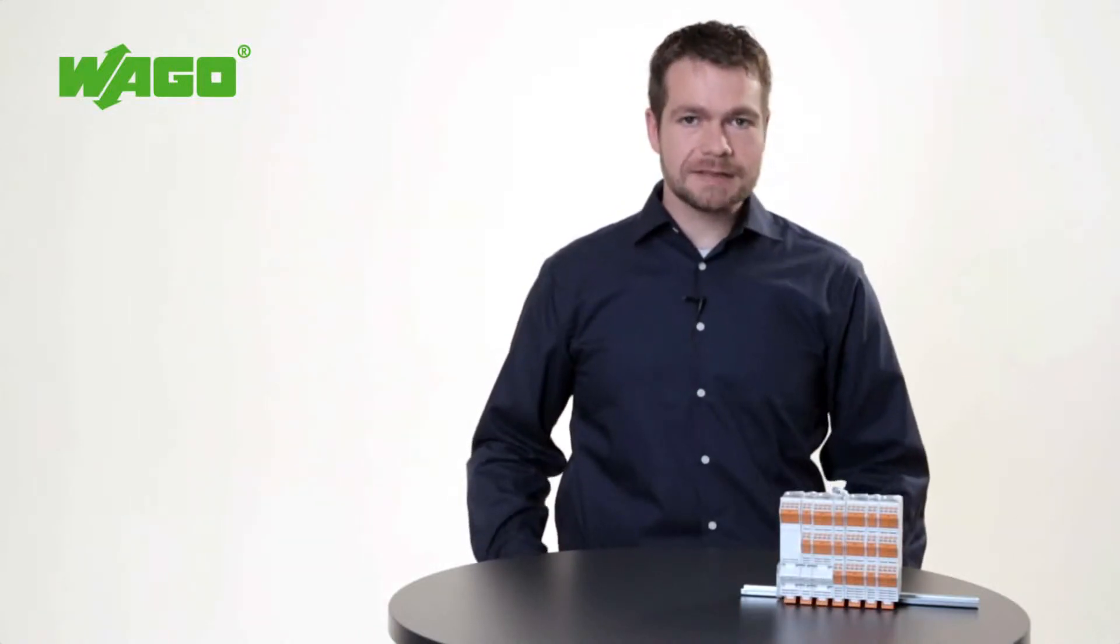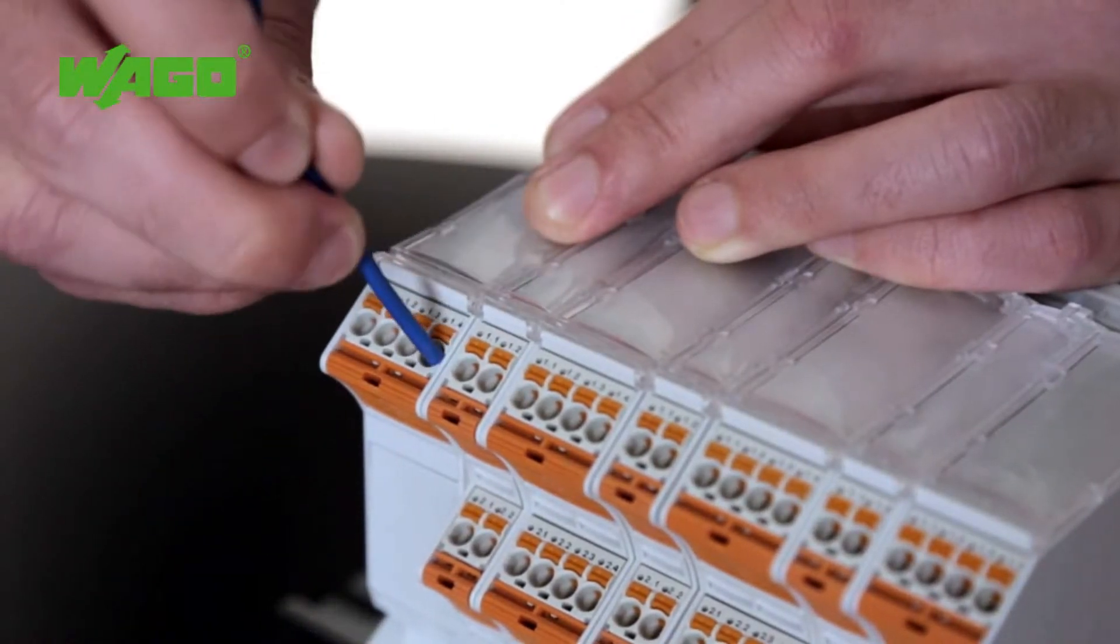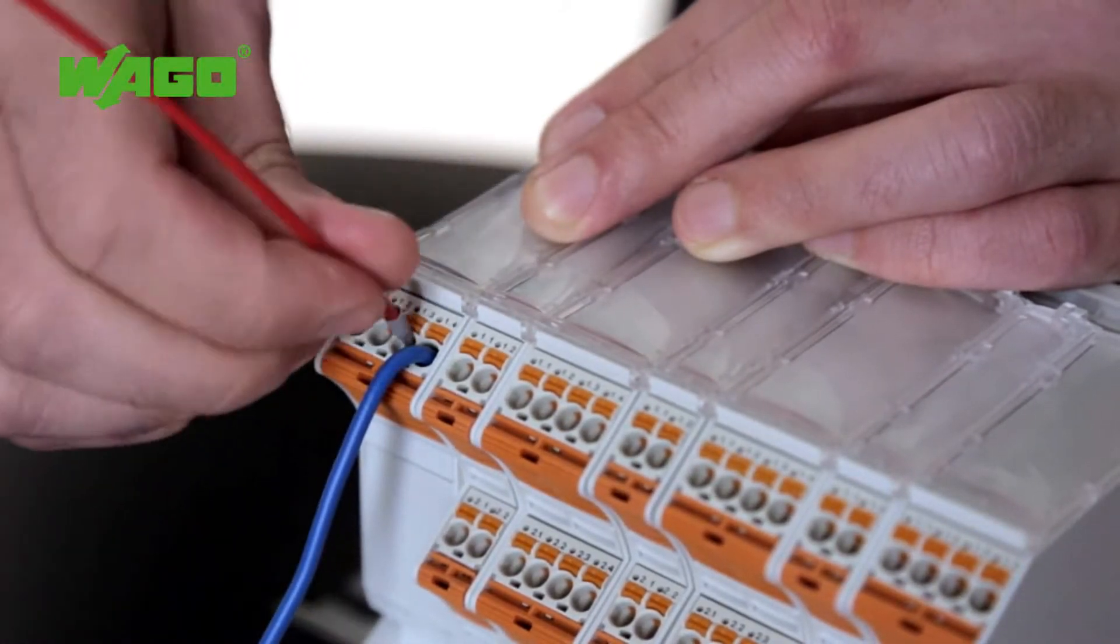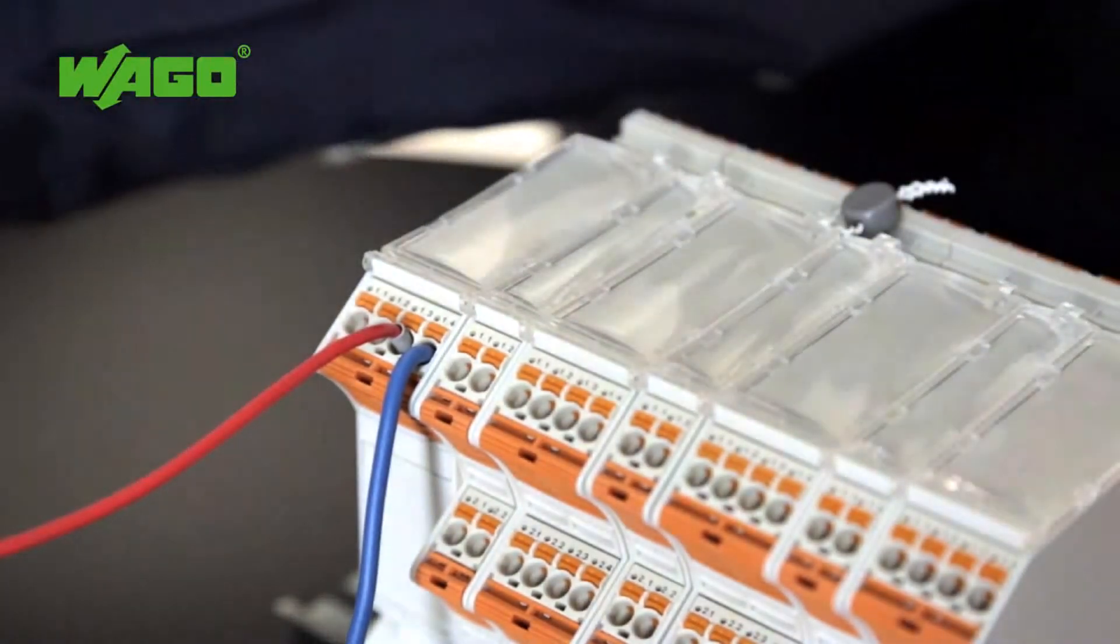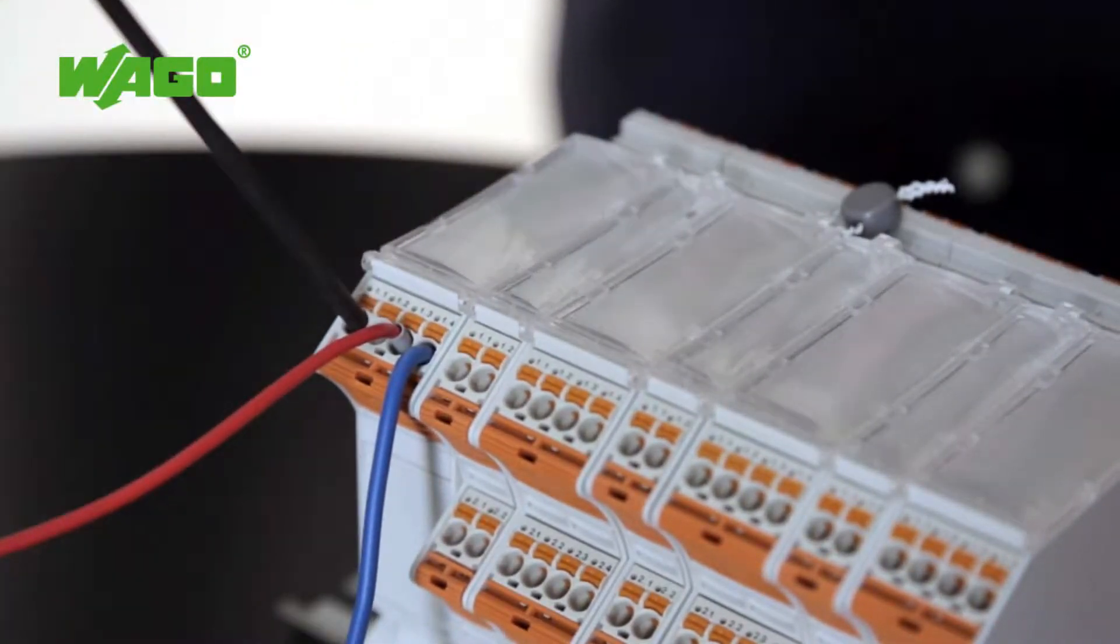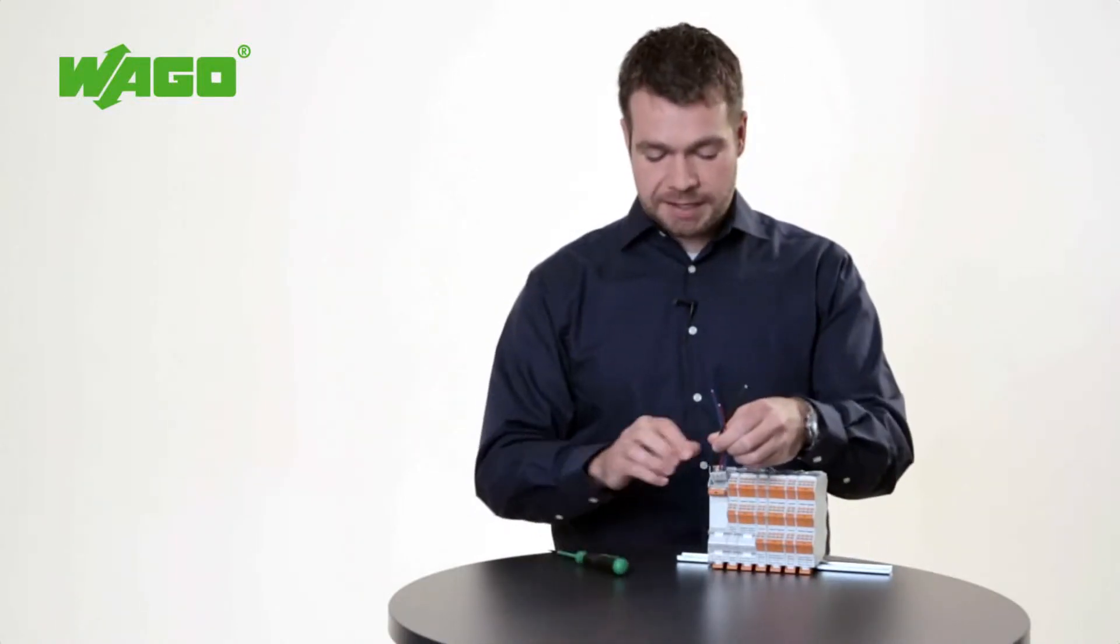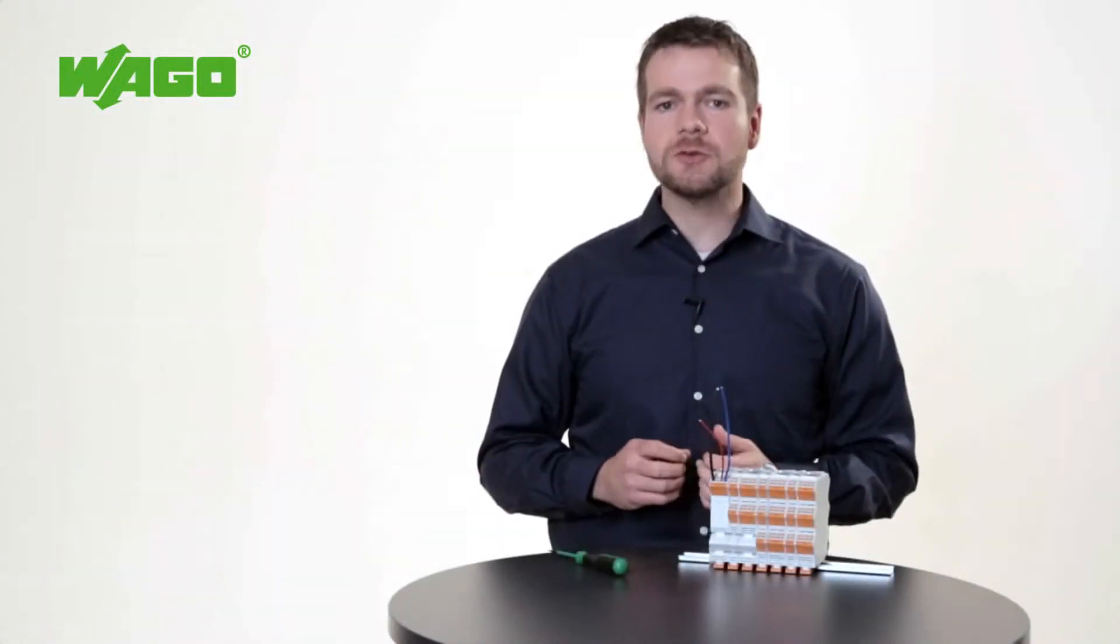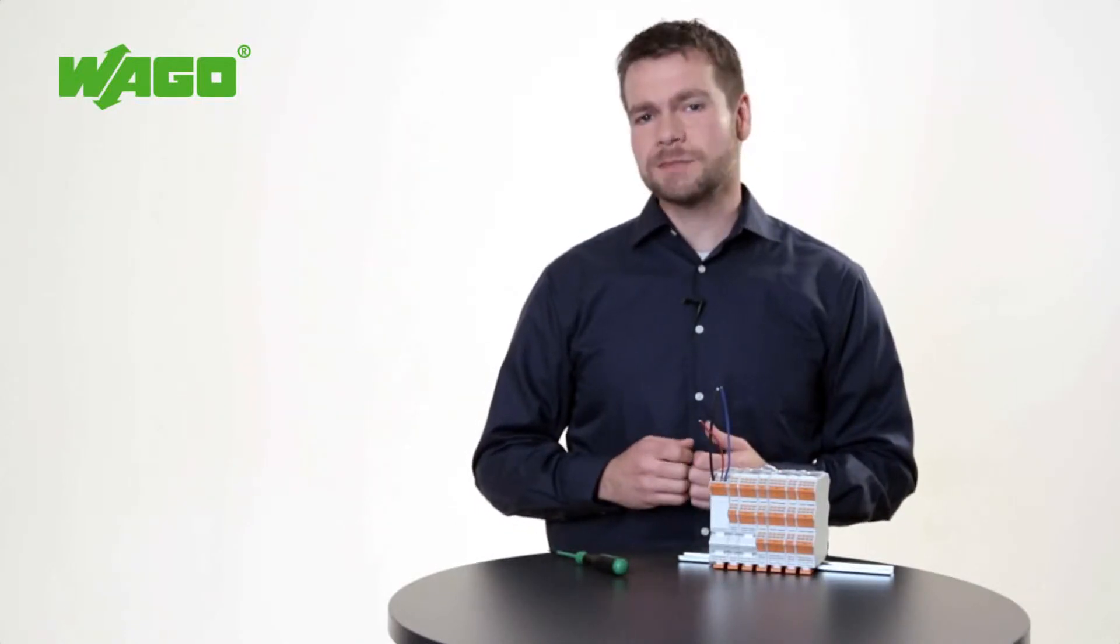Conductor termination also provides you with numerous options. Both solid and ferruled conductors are connected by simply pushing them into the unit. Fine-stranded, unferruled conductors are terminated via push-button actuation. Operation of the pluggable PicoMax connector is easy even when all conductors happen to be terminated. Furthermore, the wide cross-section range from 0.2mm up to 2.5mm provides you with a high degree of flexibility.